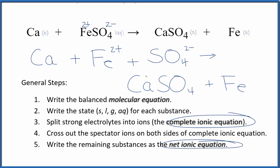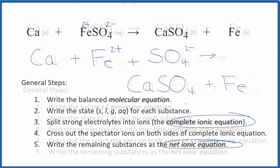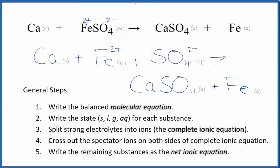Let me clean this up. I'll write the states in. We'll have our complete and net ionic equation for Ca plus FeSO4. So this is the balanced net ionic equation for Ca plus FeSO4. You'll note that the atoms, they all add up on both sides. So the atoms are balanced and the charge is balanced too.